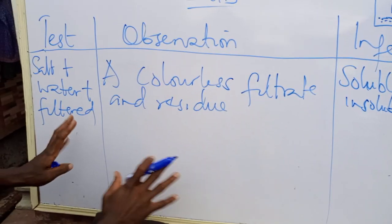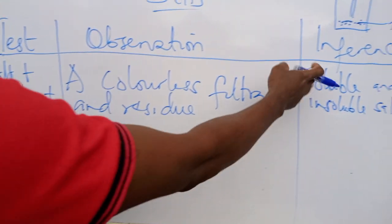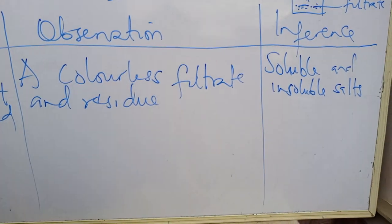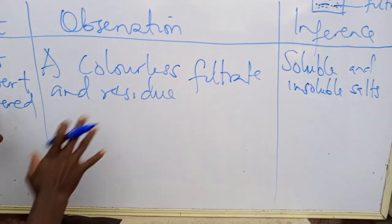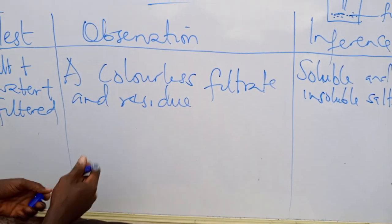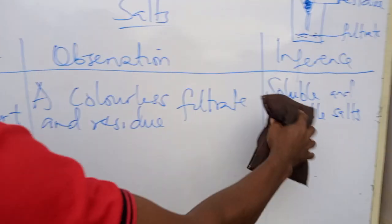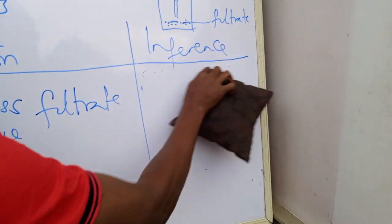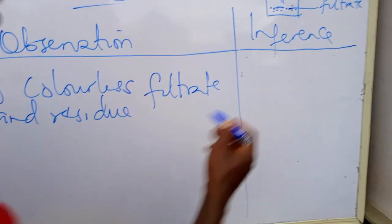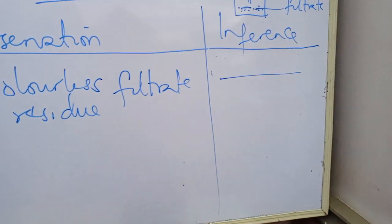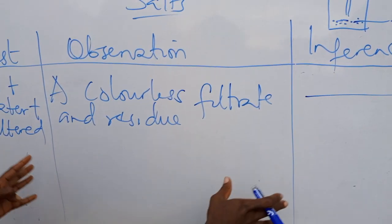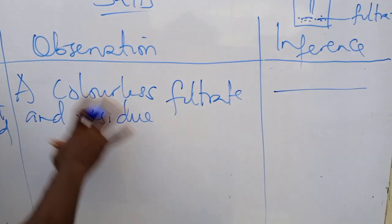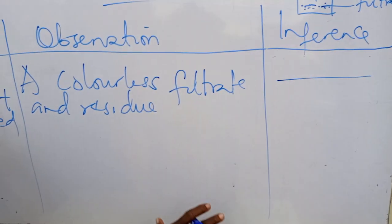We need to learn the soluble and insoluble salts. With knowledge of soluble and insoluble salts and the precipitating reagents, you'll be able to know what to write and how to fill the table. In the examination, they will give you dashes and spaces — you are the one who has to enter the information.